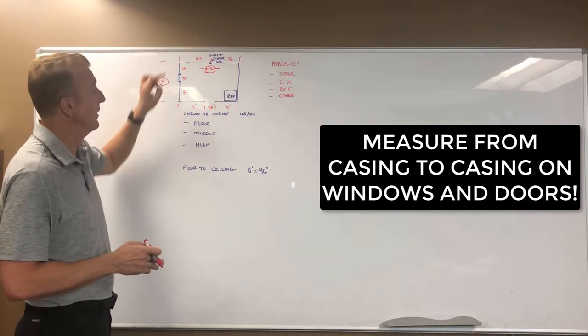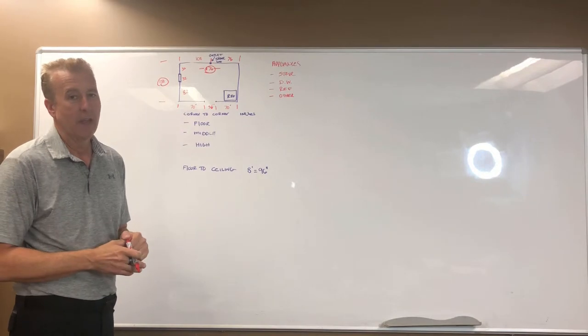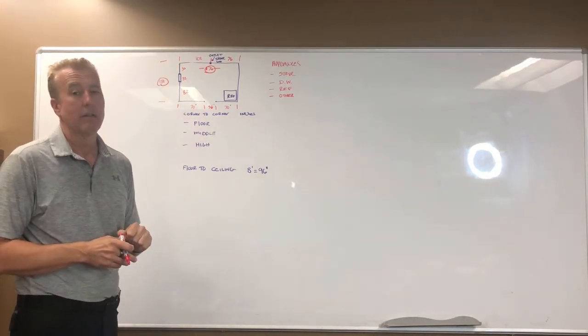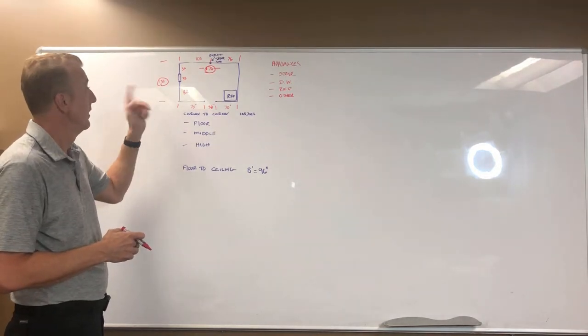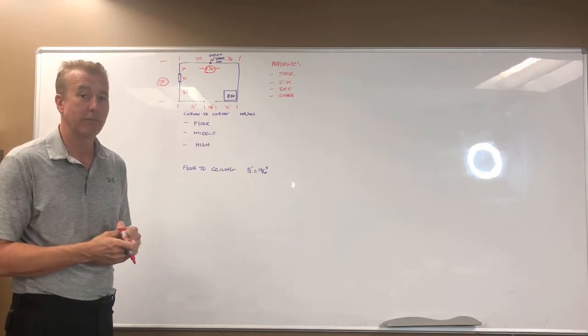The final measurement on this wall then is from that casing to the final corner, and if you were to add up those three measurements you should get the total distance from corner to corner. So in my example here, 36, 32, and 82 equal 150. Then you know you did it right.